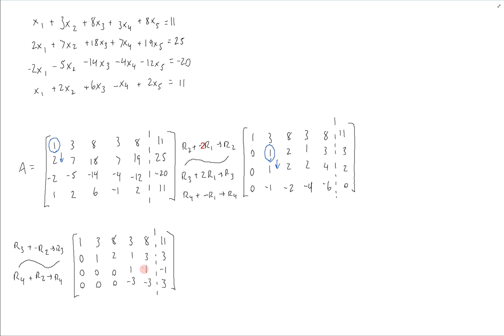Now we've created zeros below the second pivot. We can see the third pivot is in the third row — the first non-zero entry there — and we're going to use it to create zeros below it with the following row operation: row 4 plus 3 times row 3 to replace row 4, giving us this.